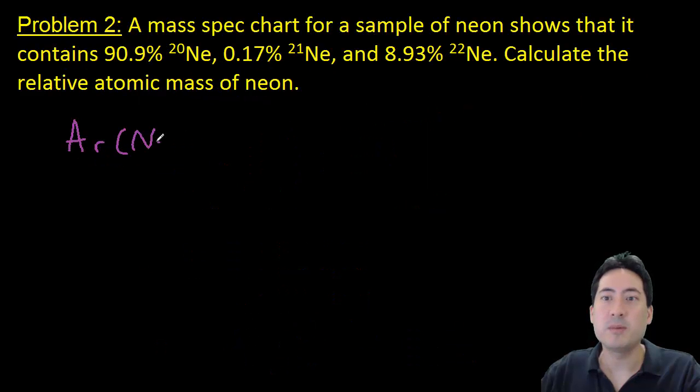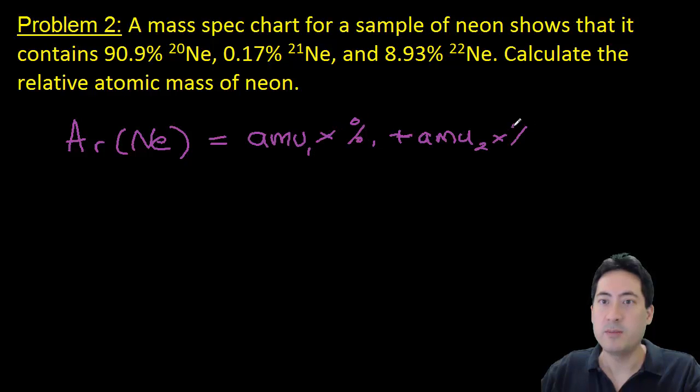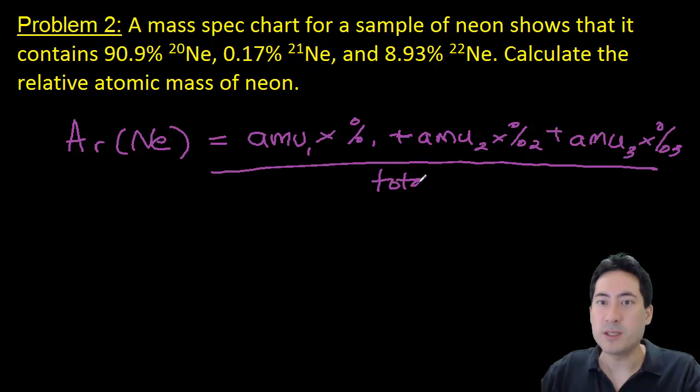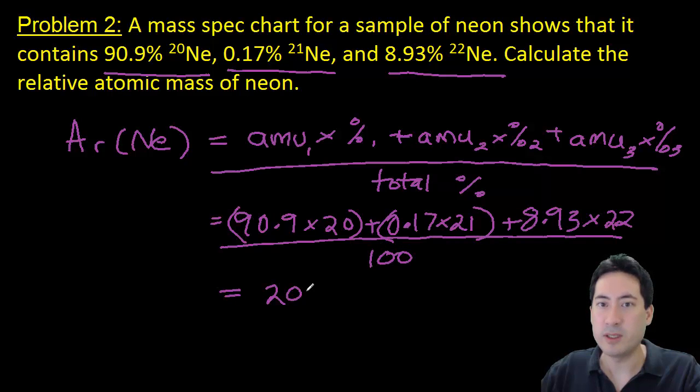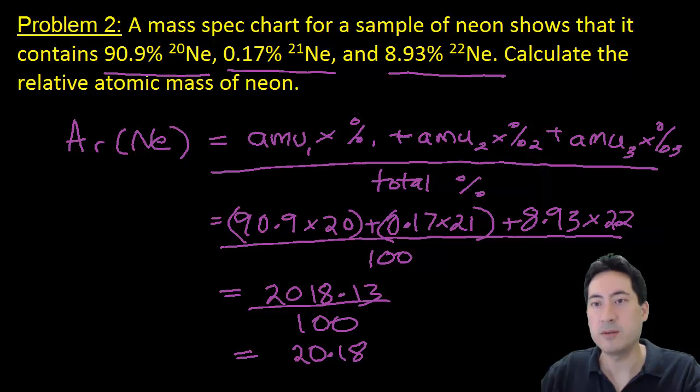Similarly here with problem two, you've got 90% of 20 and 0.17% of 21 and 8.9% of 22. Again, you just grab the different percentages of each and their masses. You times them all out and divide it by 100, and that gives you 20.18. And you can see, you always double check, well most of it's 20 so you expect it to be closer to 20 and the rest of them are slightly higher than 20 so it's going to be slightly above 20 and not slightly below 20.